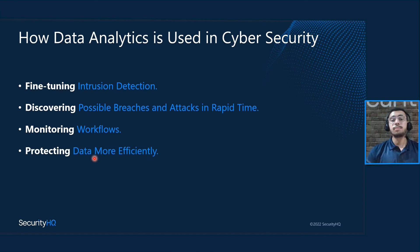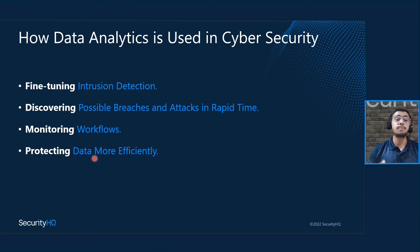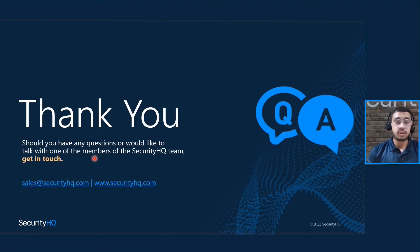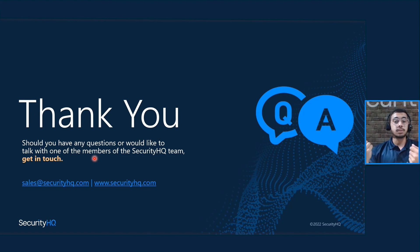Fourth is protecting data more efficiently. Data protection systems such as two-way authentication or multi-factor authentication have evolved with cybersecurity. When we couple these with data analytics algorithms, we can reinforce traditional practices of protecting data more efficiently. In conclusion, data analytics combined with cybersecurity can help not only with traditional practices, but also strengthen cybersecurity, help predict future possible attacks and breaches, and help build a more secure organization.